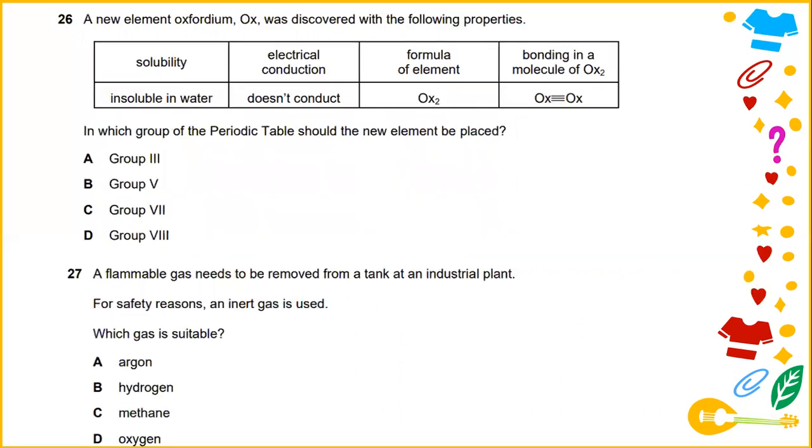A new element, Oxfordium, Ox, was discovered with the following properties. In terms of solubility, it's insoluble in water. In terms of electrical conduction, it doesn't conduct electricity. Formula of the element is Ox2, and the bonding in the molecule of Ox2 is shown in the table. In which group of the periodic table should the new element be placed? The answer for number 26 would be group 7.